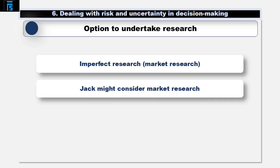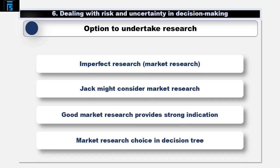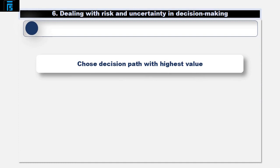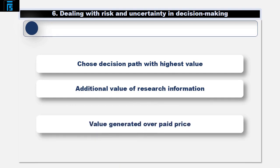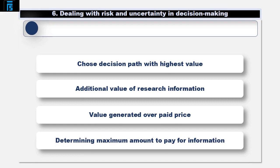Although market research is not guaranteed to be absolutely accurate, good market research will give you a strong indication. Early on in the decision making process, there may be a choice — springing from a decision node — of whether to do market research or not. The decision path with the highest value should be chosen. If the path with research is higher than without, this additional value can be attributed to the imperfect information generated by the research itself. It is the value of that information over and above the price paid for it. This approach can help us to determine the maximum we will be prepared to pay for that information.